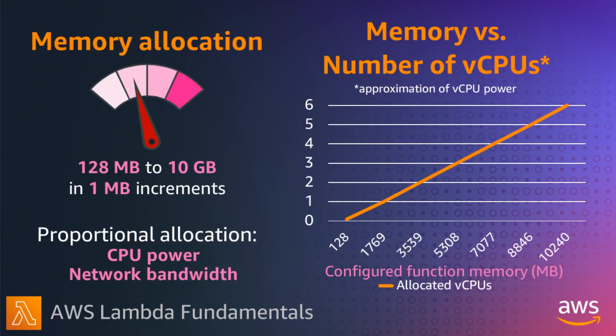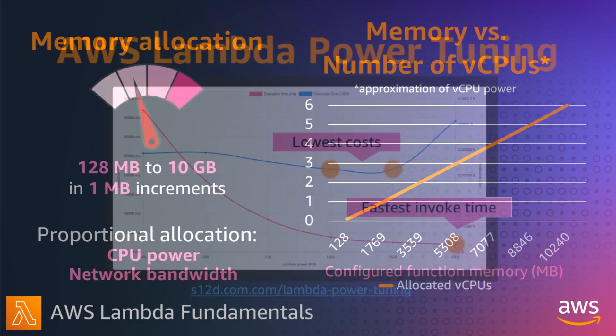In the Lambda Resource Model, you choose the amount of memory you want for your function and are allocated proportional CPU power and other resources. An increase in memory size configures an equivalent increase in CPU available to your function. Depending on the function, you might find that a higher memory level might actually cost less because the function can complete much more quickly than at a lower memory configuration.